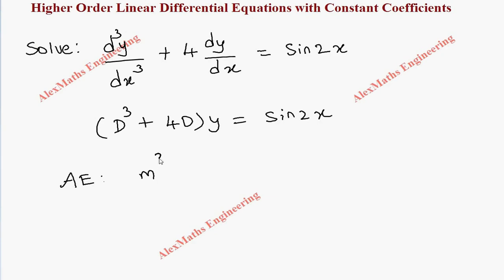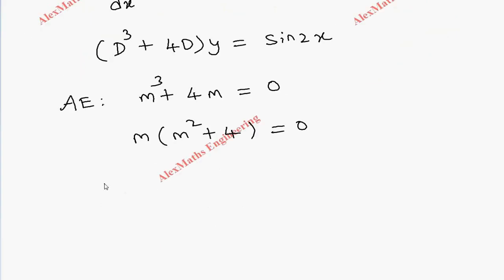When I take m common, we get m(m² + 4) = 0. By equating separately both factors, one value of m is 0, and another factor m² + 4 = 0.